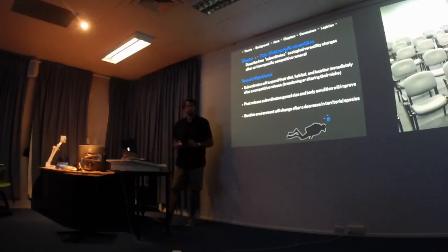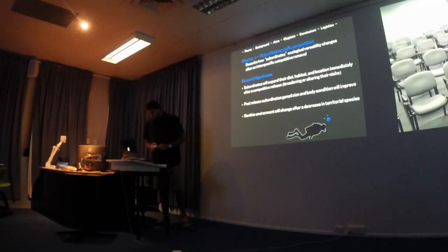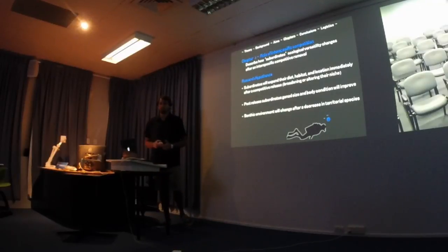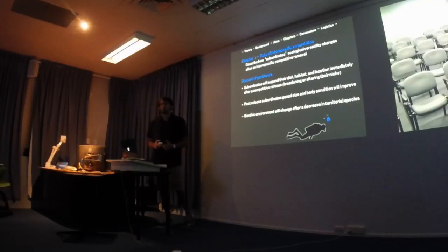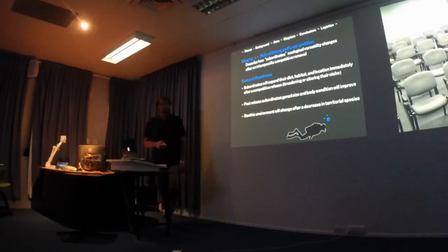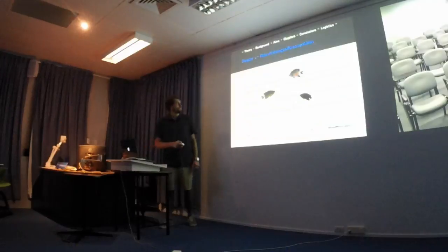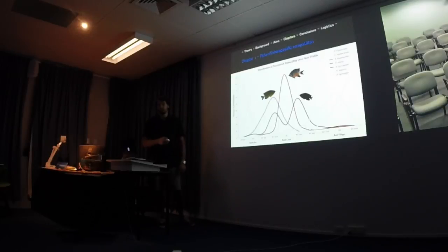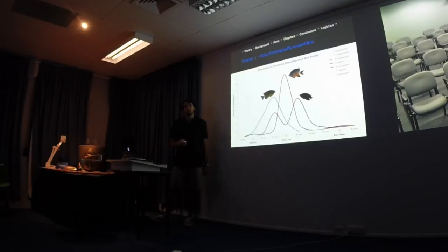Chapter three is about taking one competitor out of the system in a removal experiment. My hypotheses are that subordinates will expand their diet, habitat use, and location on the reef after competitive removal — broadening their niche space — that post-release subordinates' gonad size and body condition will improve due to fewer competitive interactions, and that the benthic environment will change after a decrease in territorial species. I've chosen the three reef crest species: Lacrymatis, the dominant occupier of the reef crest tip; Adelis with its bimodal distribution around it; and Bancinensis, the most aggressive, truly fighting for space.